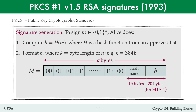Suppose that n has byte length k. For concreteness, let's say that k is 384, so the bit length of n is 3072. Alice forms the padded hash value of length k bytes as follows. She inserts the hash value h at the right end of the string. If the hash function were SHA-1, then h would be 20 bytes in length. To the left of h is added some fixed encoding of the name of the hash function. This takes 15 bytes. The encoding is specified in the standards.